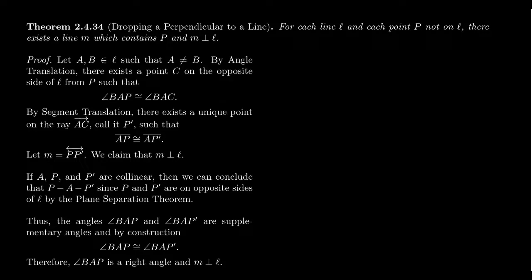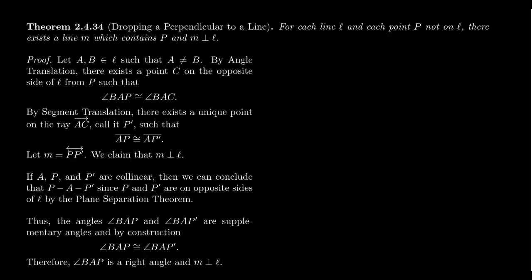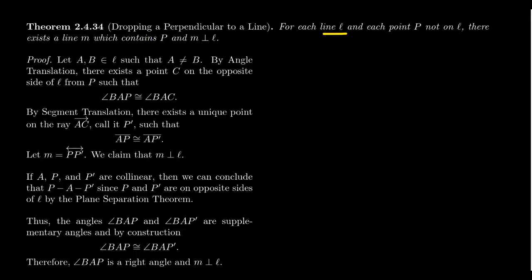The theorem we want to prove is the following: given a line L and a point P that is not on L, there exists a line M that contains P but is perpendicular to L. On the surface this sounds like the Euclidean parallel postulate, but instead of a parallel line through P, we're guaranteeing a perpendicular. In congruence geometry we have no assumptions about parallel lines, so we are not doing that.